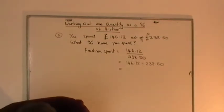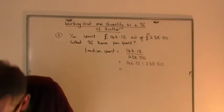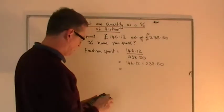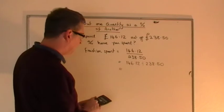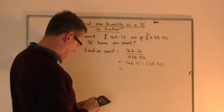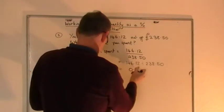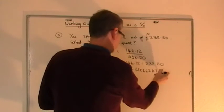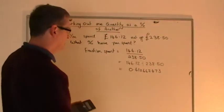Which I should have somewhere around here. Here we go, got a calculator. So we've got £146.12, £146.12 divided by £238.50. And we get this decimal: 0.612662473. So that decimal is equivalent to that.